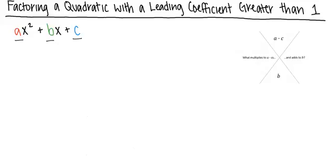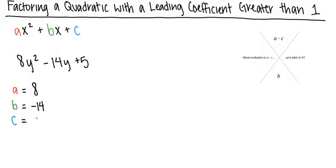Let's take a look at the following problem: 8y squared minus 14y plus 5. Looking at this problem, we can identify that a equals 8, b equals negative 14, and c equals 5.